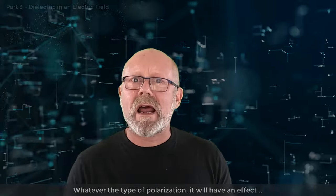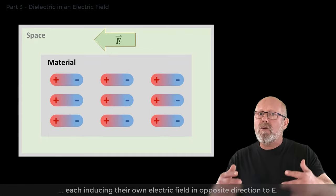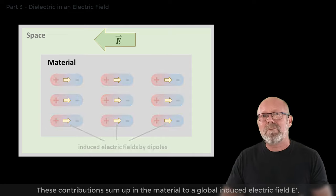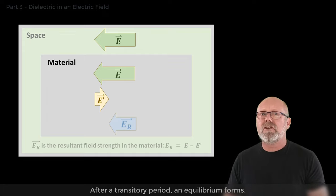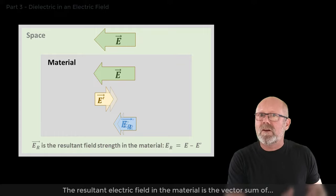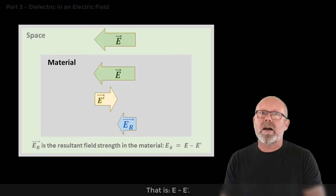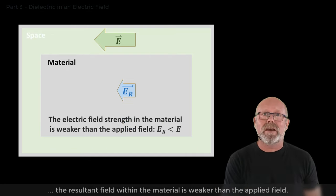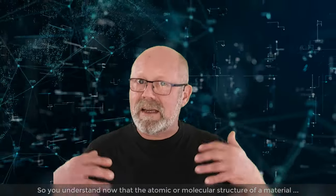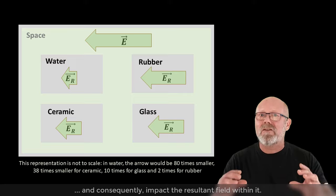Whatever the type of polarization, it will have an effect on the resultant electric field inside the material. By applying an electric field E, many small dipoles appear in the material, each inducing their own electric field in the opposite direction to E. These contributions sum up in the material to a global induced electric field E' that opposes the applied electric field E. After a transitory period, an equilibrium forms. The resultant electric field in the material is the vector sum of the applied field and the induced field — that is E minus E'. Because the directions of the fields are opposite, the resultant field within the material is weaker than the applied field.